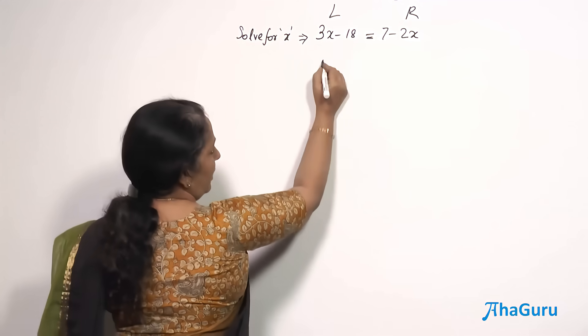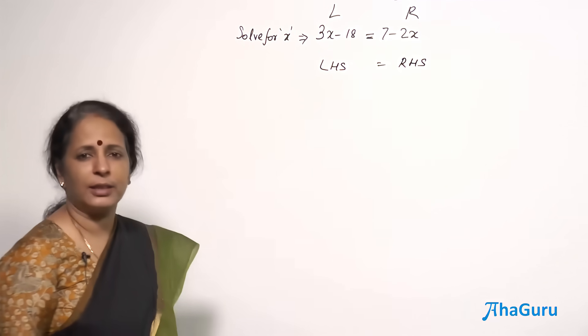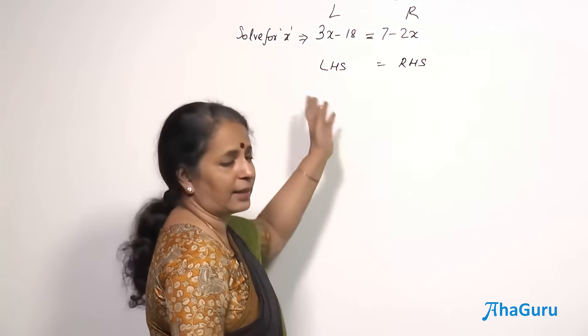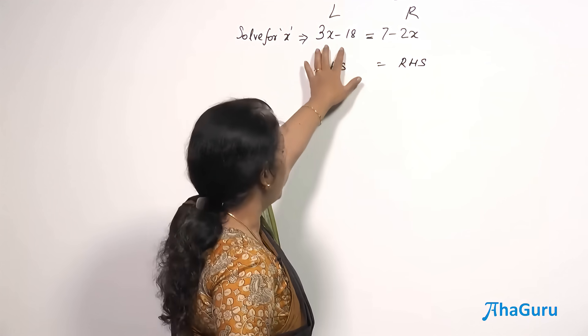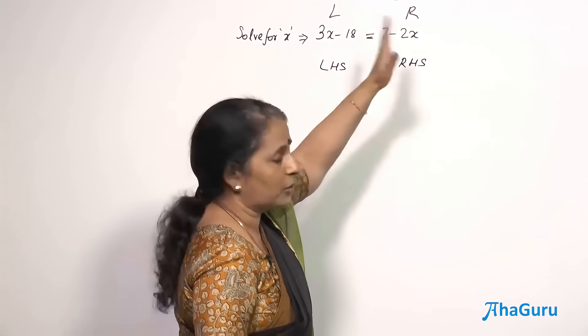When you say left and right, it is generally written as LHS. When you are learning for the first time, these symbols will be there always: LHS and RHS. This is left hand side and right hand side. So left hand side is on the left of the equal to sign. Right hand side is on the right.